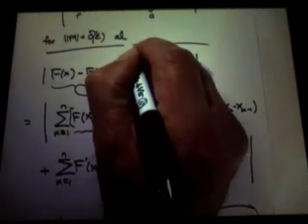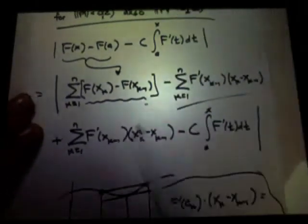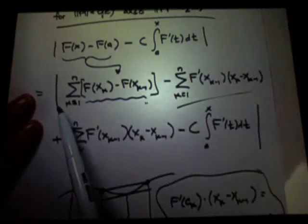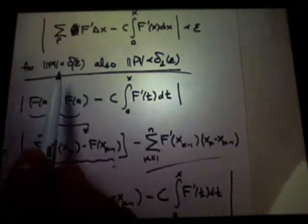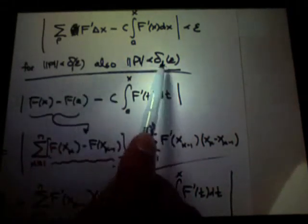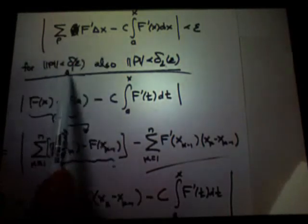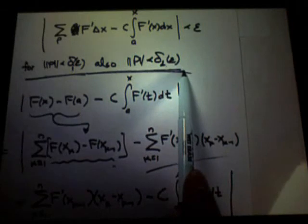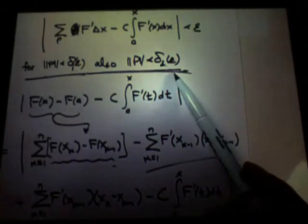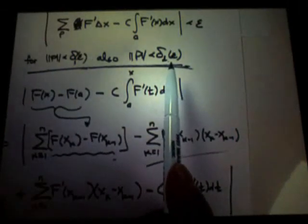Now, remember, we went out and also picked the norm of the partition to be less than delta 2 of epsilon, which forced the variation on any Cauchy sum to be, on any sub interval of the Cauchy sum to be less than epsilon. So I'm picking a delta that is the minimum, the minimum of these two. This delta ensures that any Cauchy sum with mesh less than delta 1 is no more than epsilon away from the integral. This delta ensures that the variation of the function on any sub interval is not more than epsilon. So I take the minimum of these two so I can keep the norm of the partition below the minimum. Both things happen. Okay.